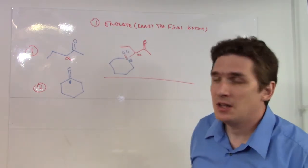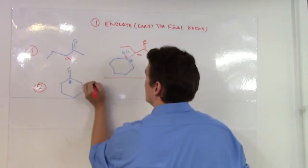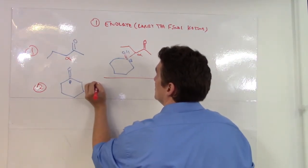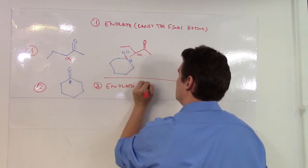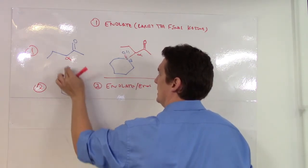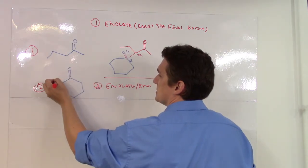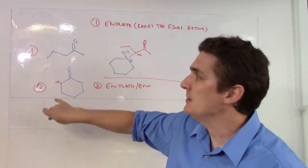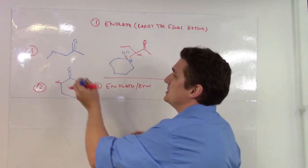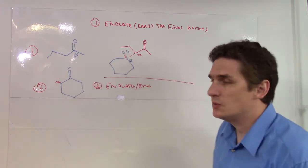We now need to consider the other scenario, and this is the case where number two forms the enolate or the enol. Now, in this case, since this is symmetric, this is going to be one of the alpha carbons, and this here is going to be the beta carbon relative to the ketone that is formed.